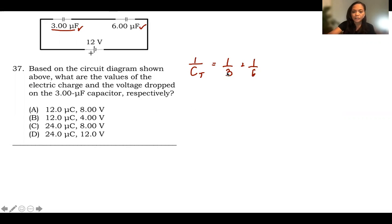To add fractions, we should have the same denominator. So I will write here 2 over 6 plus 1 over 6. I will get 3 over 6 or simply one half.